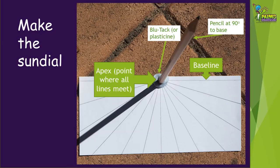To make the nodal sundial, place a piece of Blu-Tac or plasticine on the apex point of the base and push a pencil into it. Make sure the pencil is sitting up nice and straight at 90 degrees or perpendicular to the base.